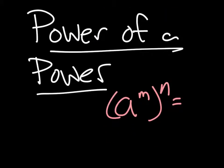When we have a to the m to the n, when we have an exponent raised to another exponent, what we can do is we can take and multiply the exponents together.